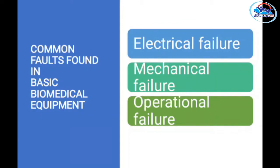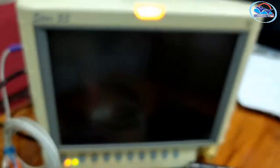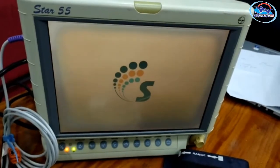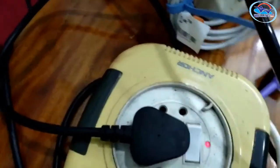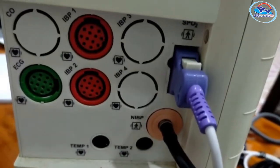There are different types of faults in devices. Basic faults include Electrical Failures. In the electrical section, examples include the Power Cord, Circuit Breaker, Fuse, Equipment Connections, Soldering, and Pressing contacts causing electrical failure.